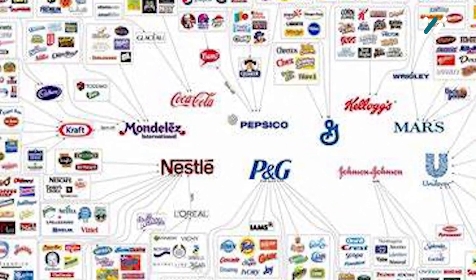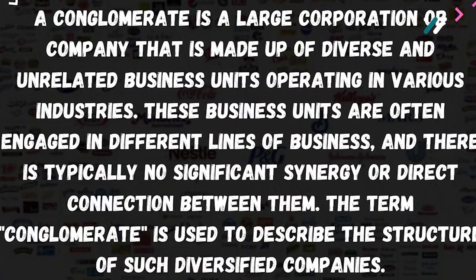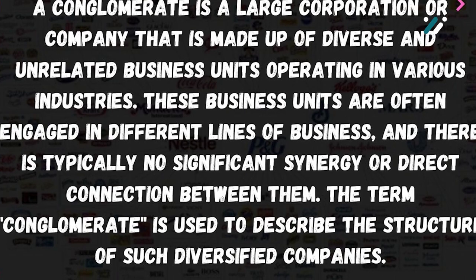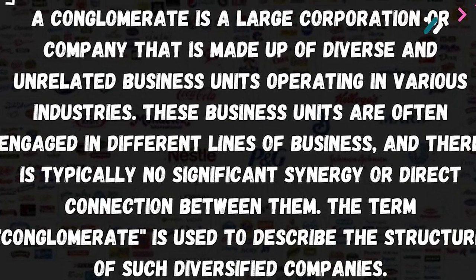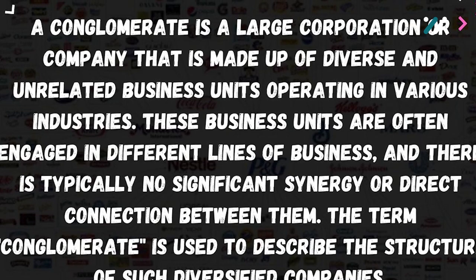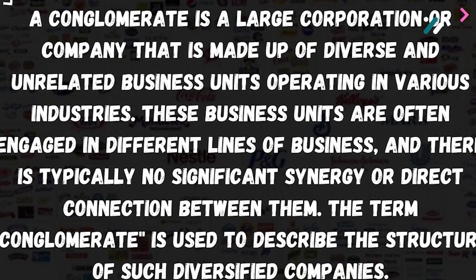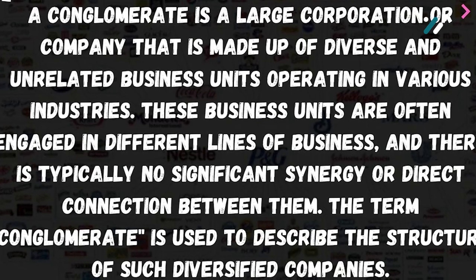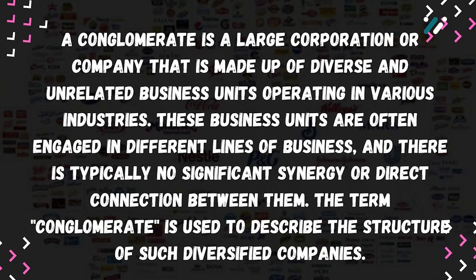Firstly, what do we mean by conglomerate? A conglomerate is a large corporation or company that is made up of diverse and unrelated business units operating in various industries. These business units are often engaged in different lines of business, and there is typically no significant synergy or direct connection between them. The term conglomerate is used to describe the structure of such diversified companies.